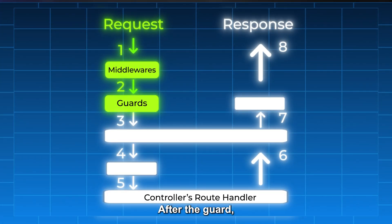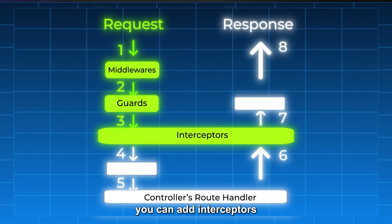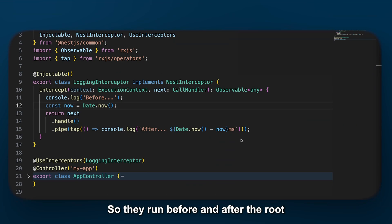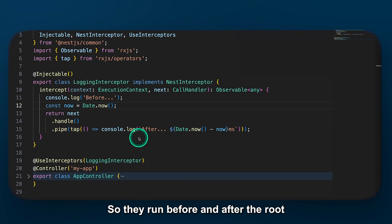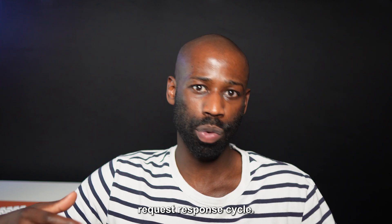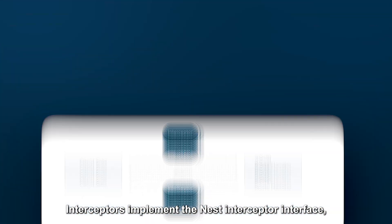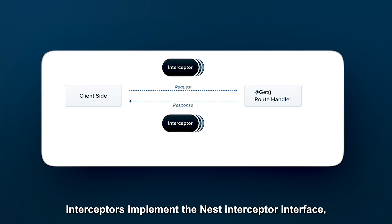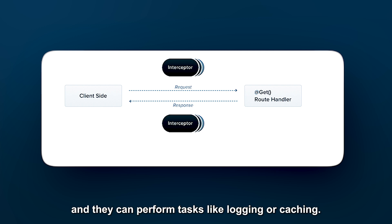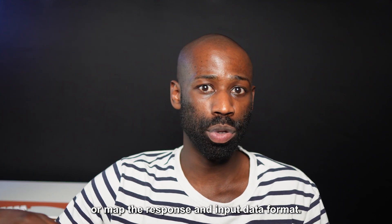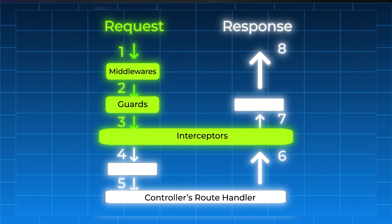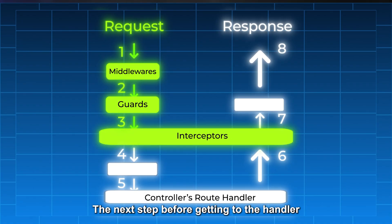After the guard, you can add interceptors to your application. They run before and after the route handler, giving you full control over the request-response cycle. Interceptors implement the NestInterceptor interface and can perform tasks like logging or caching. For example, an interceptor can log request details or map the response and input data format.